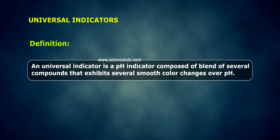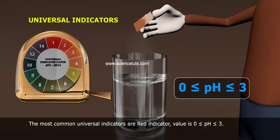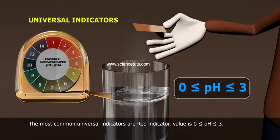Universal Indicator: A universal indicator is a pH indicator composed of a blend of several compounds that exhibits several smooth color changes over pH. The most common universal indicators are red indicator...